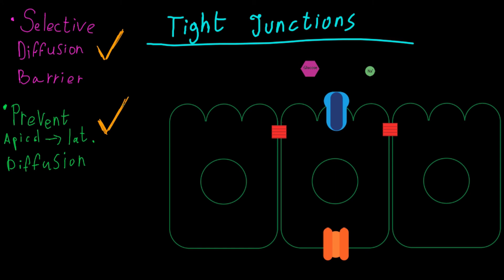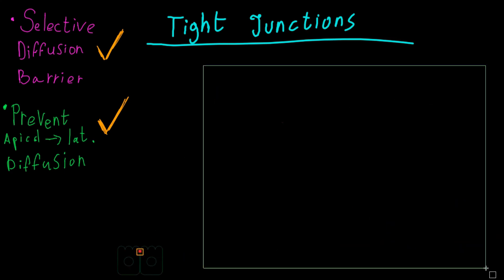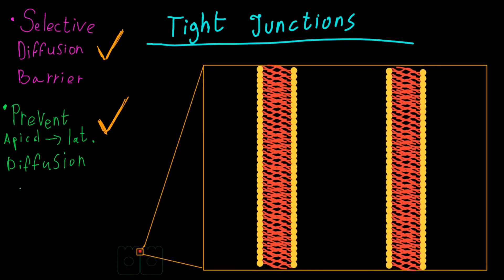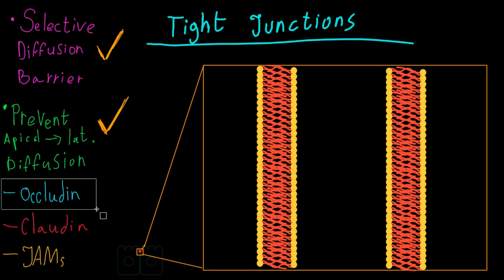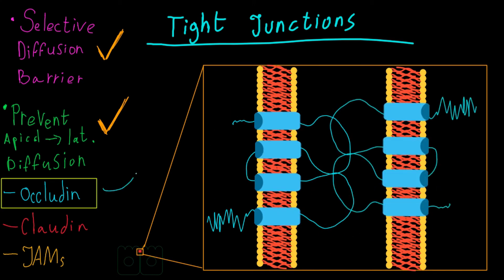Now let's talk about the proteins that make up the tight junction complex. Tight junctions are mostly made of proteins, and the three most important ones are occludin, claudin, and JAMs. Tight junctions are known as occluding junctions, and occludin was the first protein ever identified within tight junctions. The function of occludin is to participate in maintaining the paracellular barrier — the barrier between cells and between the apical side and the rest of the cell's sides. Occludin is expressed in most tight junctions, although some epithelial cells lack occludin and still possess normal, fully functional tight junctions.